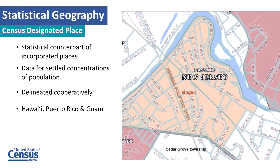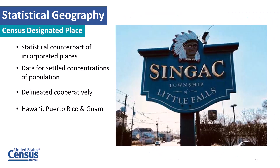We also have the census-designated place, or CDP. Here's a map — it's Syngac, New Jersey. It's the statistical counterpart of an incorporated place: it is not incorporated, but it looks like it probably should be. It is a settlement or concentration of population, delineated with the county roughly every 10 years. In some places — Hawaii, Puerto Rico, and Guam — there are no incorporated places, and they only use census-designated places to get data.